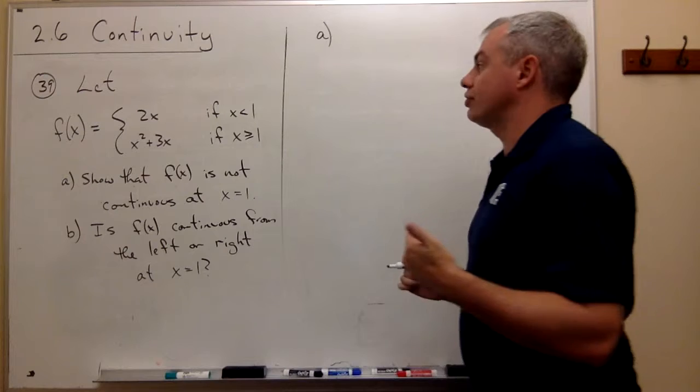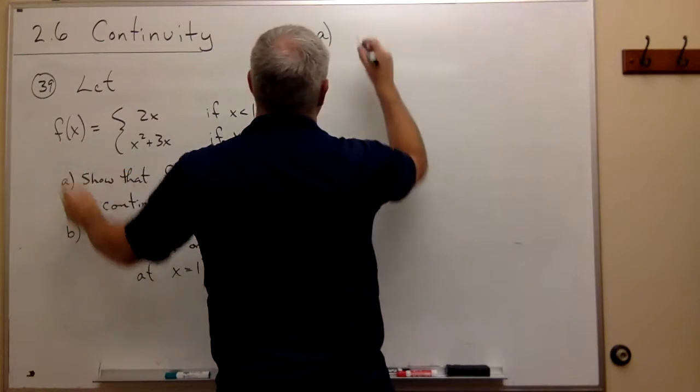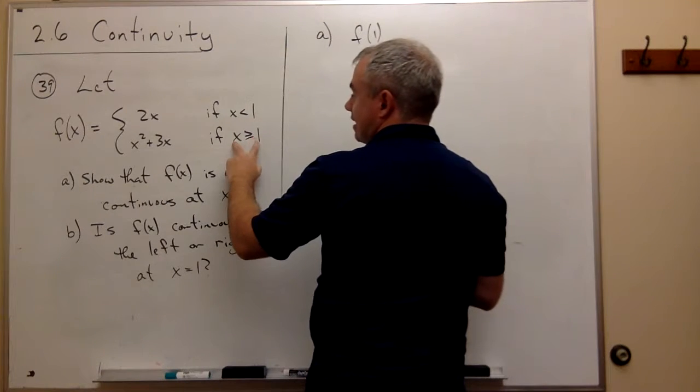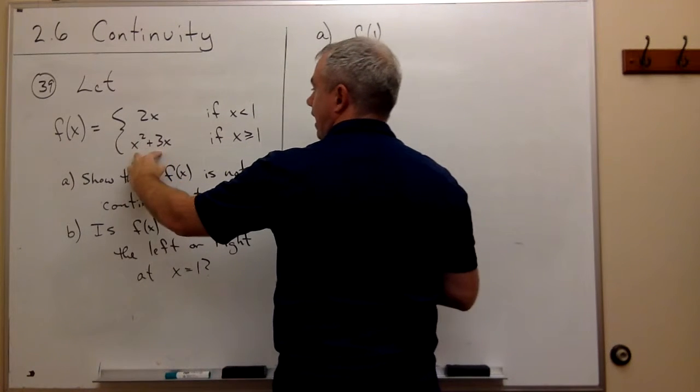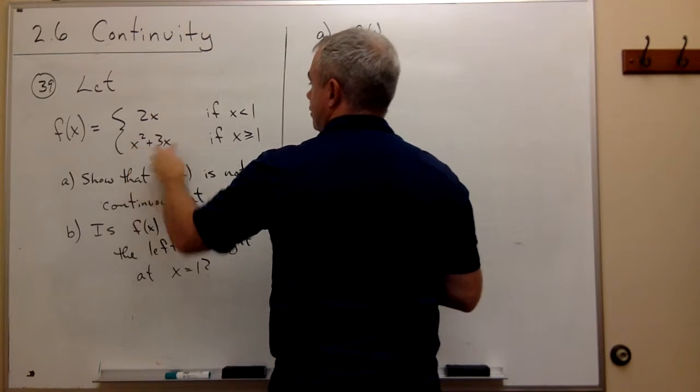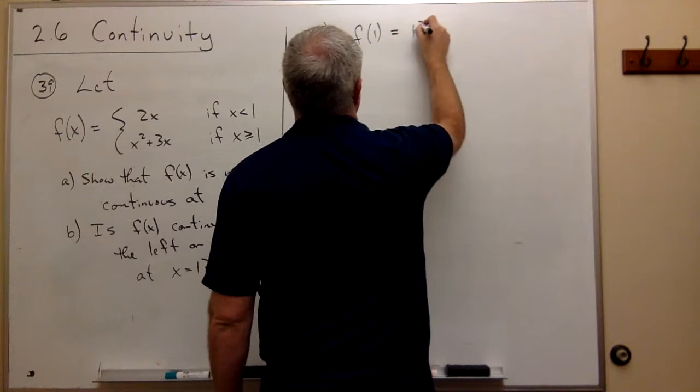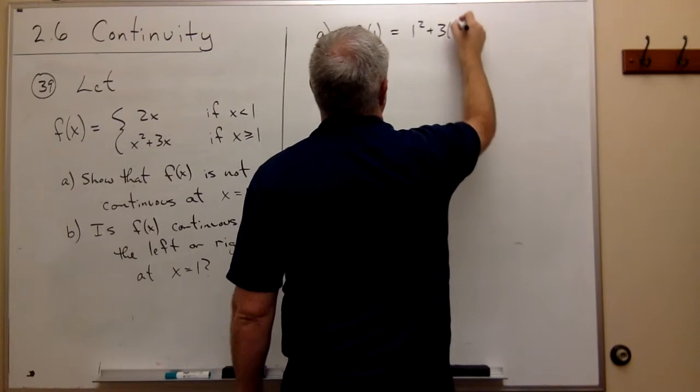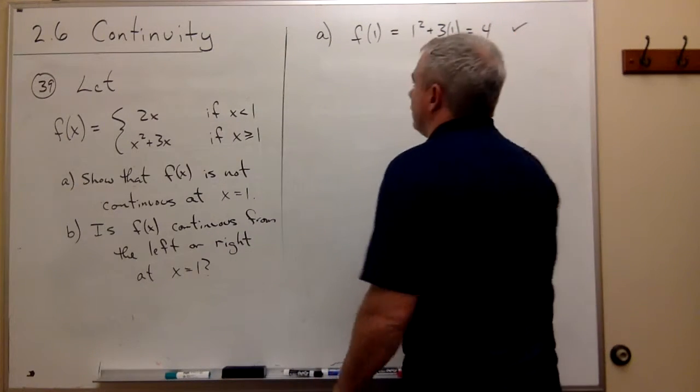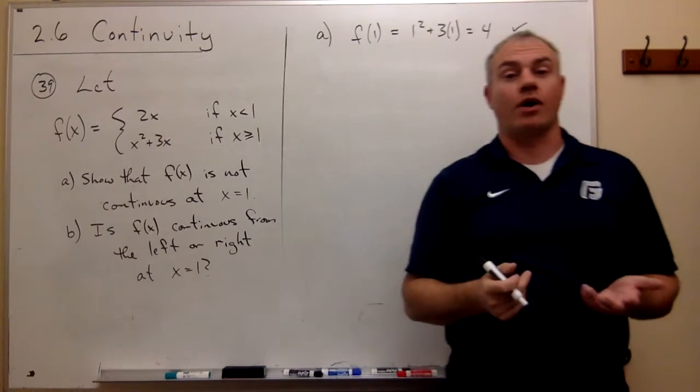So does it have a functional value at 1? Well, if I plug in 1 for f of x, or f of 1, then for if x is equal to 1, I use this guy. So I plug 1 in here. So I get 1 squared plus 3 times 1, which is just 4. And yes, indeed, this function does have a functional value at 1.